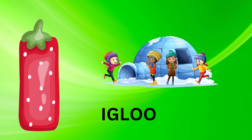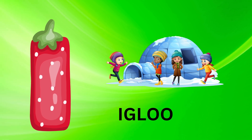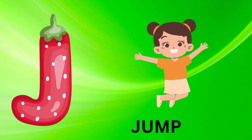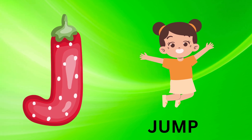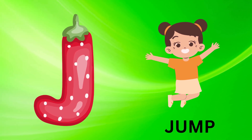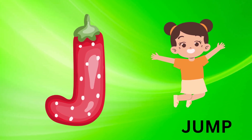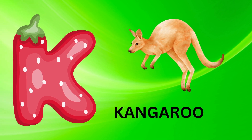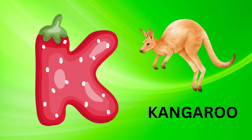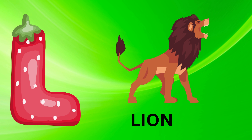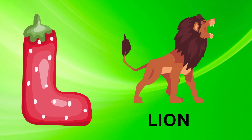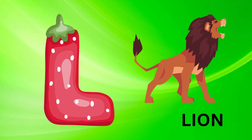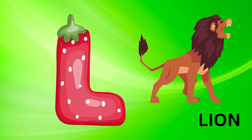I is for igloo, i-i-igloo. J is for jump, j-j-jump. K is for kangaroo, k-k-kangaroo. L is for lion, l-l-lion.